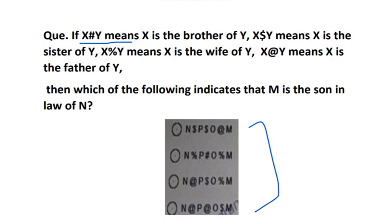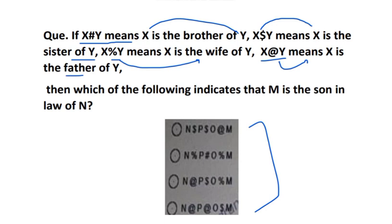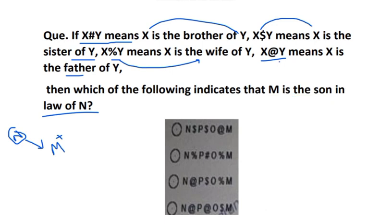You can see: x has 5 means x is the brother of y; x dollar y means x is the sister of y; x percent y means x is the wife of y; and x at-the-rate y means x is the father of y. We have to tell: M is the son-in-law of N. That means M should be male, and M is the son-in-law of N, meaning there will be one generation gap between both of them.